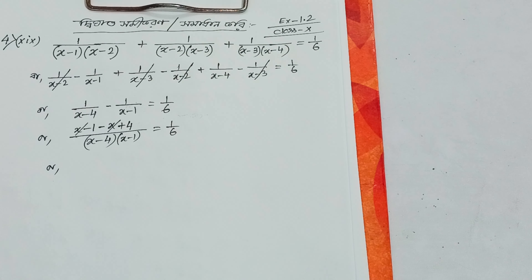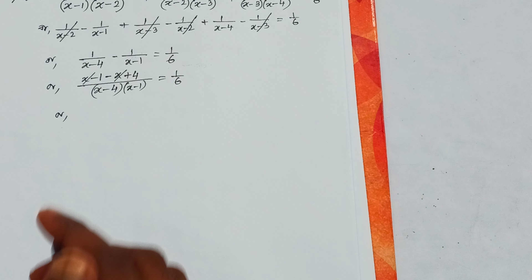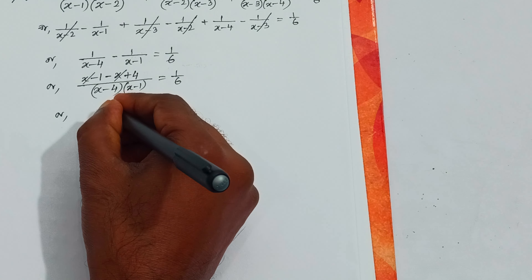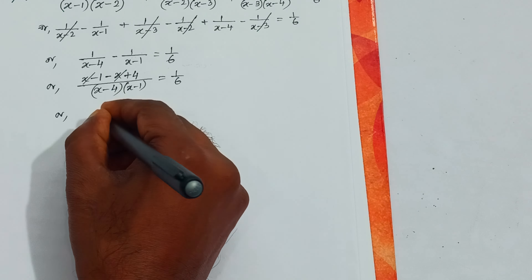1/(x-1)(x-2) + 1/(x-2)(x-3) + 1/(x-3)(x-4) = 1/6. We will break all terms using partial fractions.